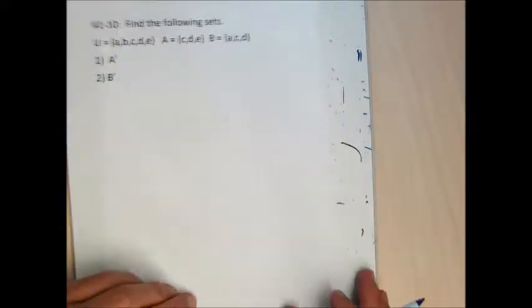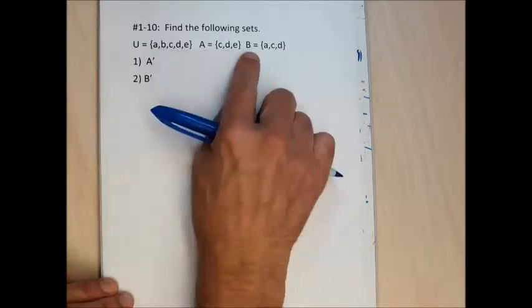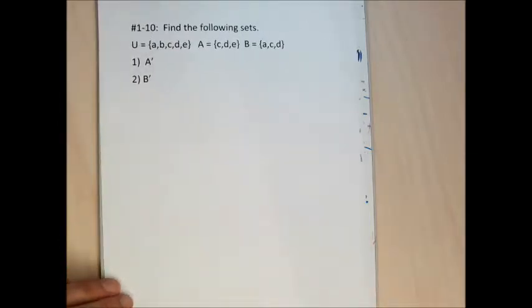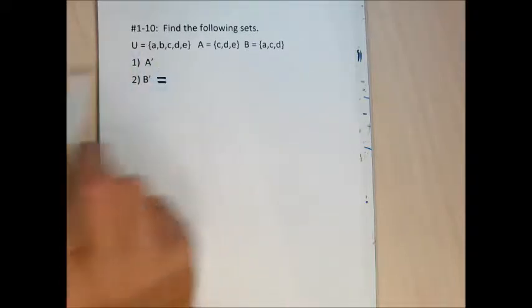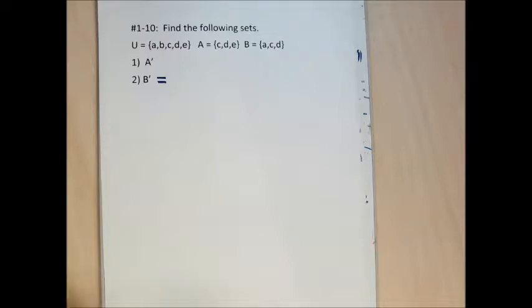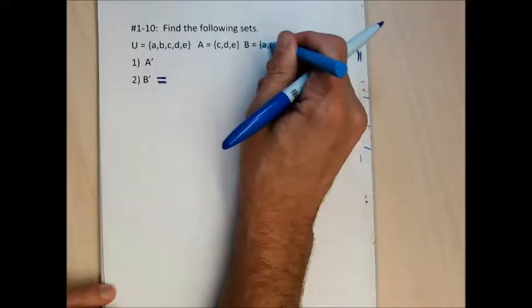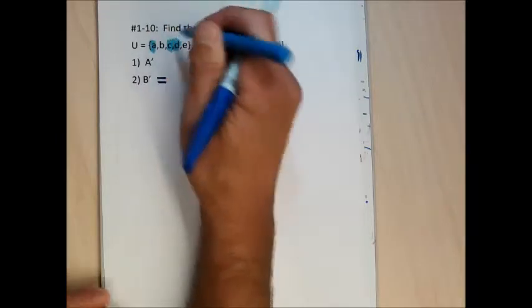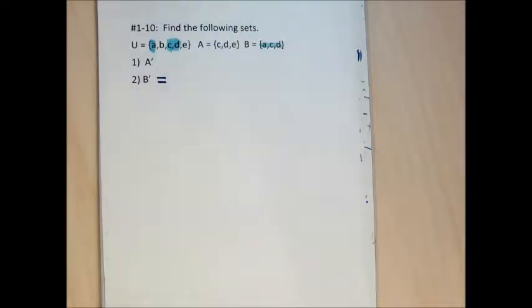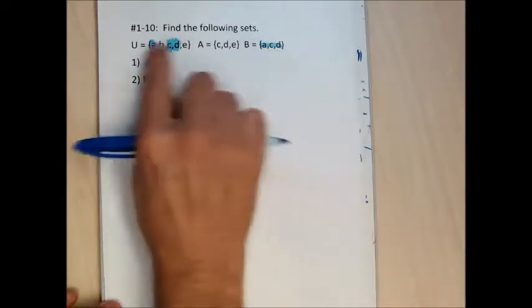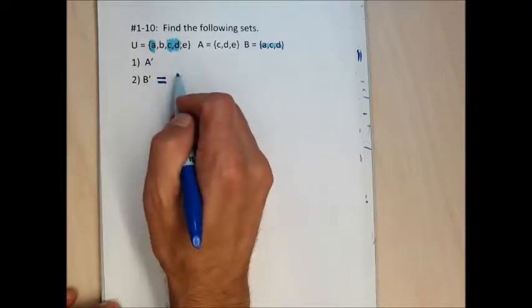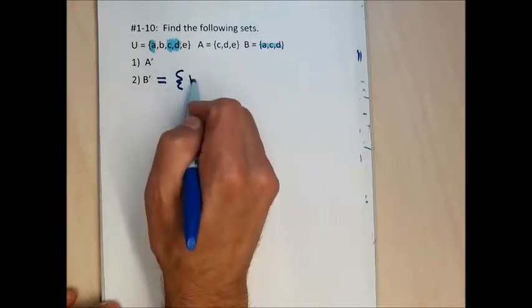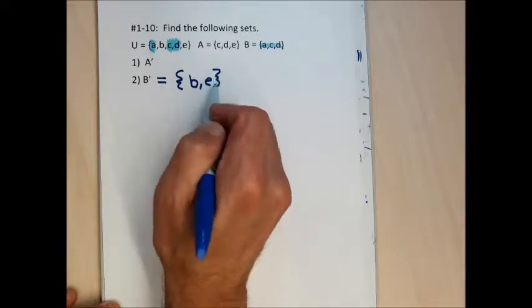Now we get to do some homework problems. For problem 2, I need to find B complement. Set B is {A, C, D}. To find B complement, I go to the universal set and cross out elements that are in set B — A, C, and D. What's left is what B complement is. My answer to question 2 is the set containing the letters B and E.